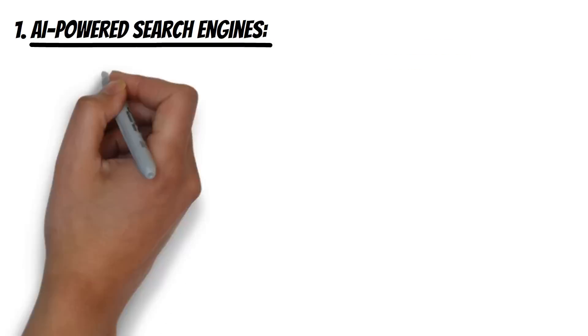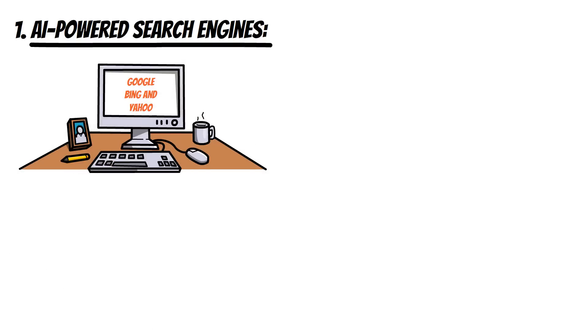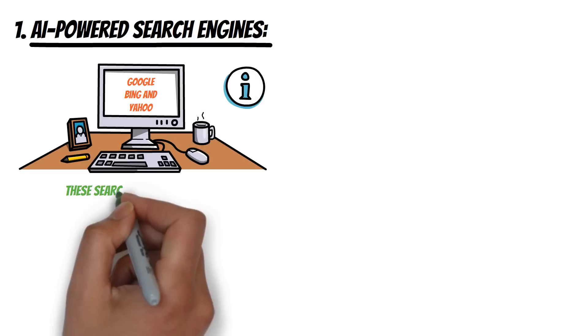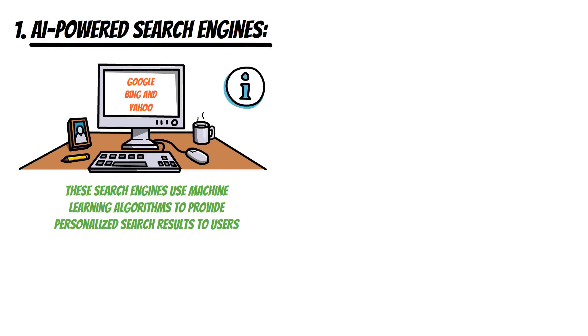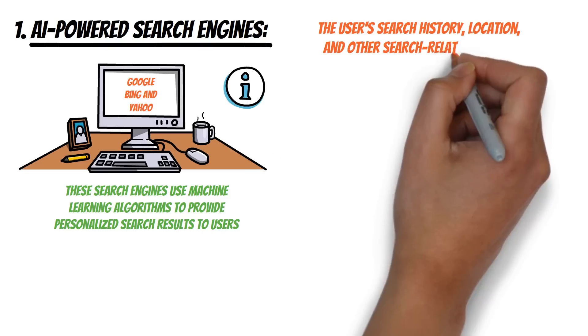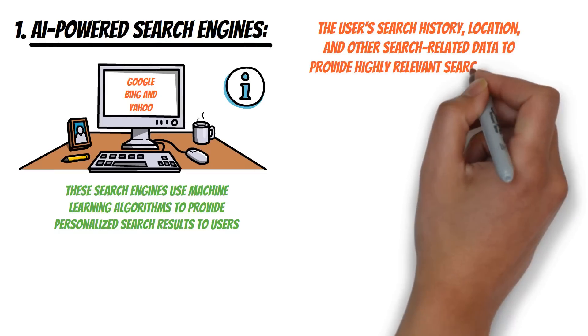AI-powered search engines such as Google, Bing, and Yahoo have transformed the way we search for information on the internet. These search engines use machine learning algorithms to provide personalized search results to users. The algorithms consider various factors such as the user's search history, location, and other search-related data to provide highly relevant search results.